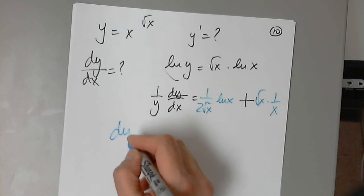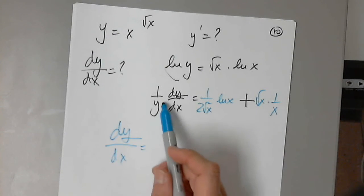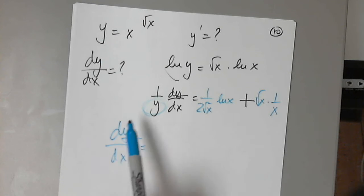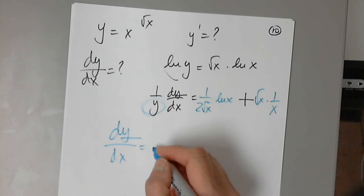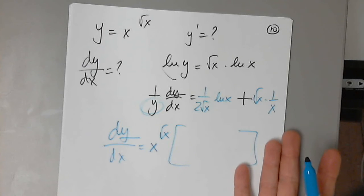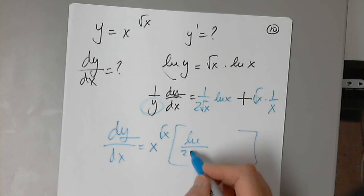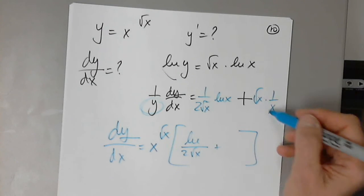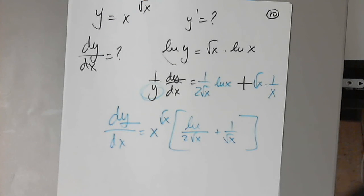And now it's done. I have dy over dx — I need to solve for dy over dx, and I don't want the 1/y in front. So I multiply both sides by x raised to the square of x. Just write natural log x over 2 times the square of x. You can simplify if you'd like to have the same denominator, but it doesn't make any difference. So that would be the final form of dy over dx.